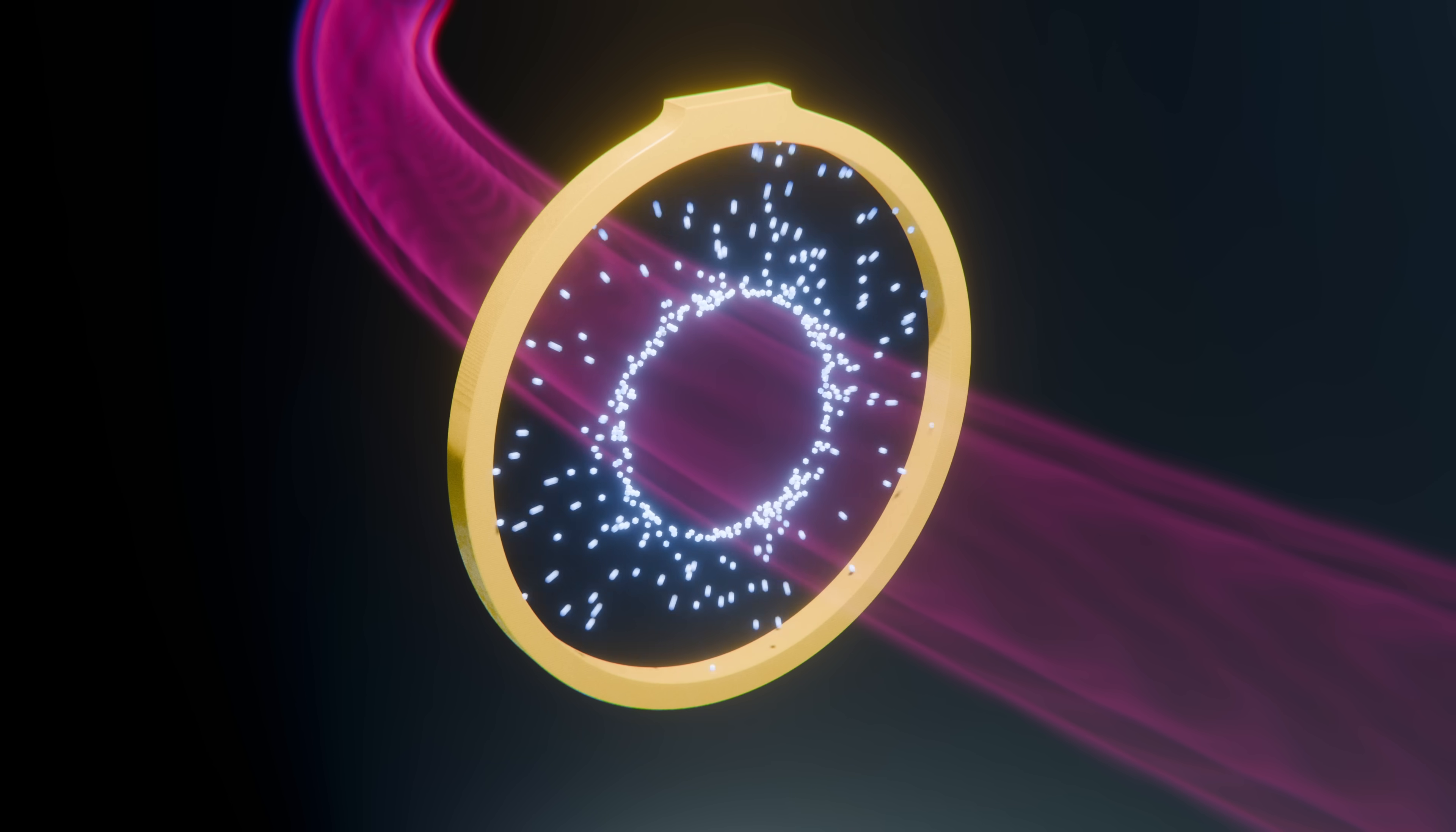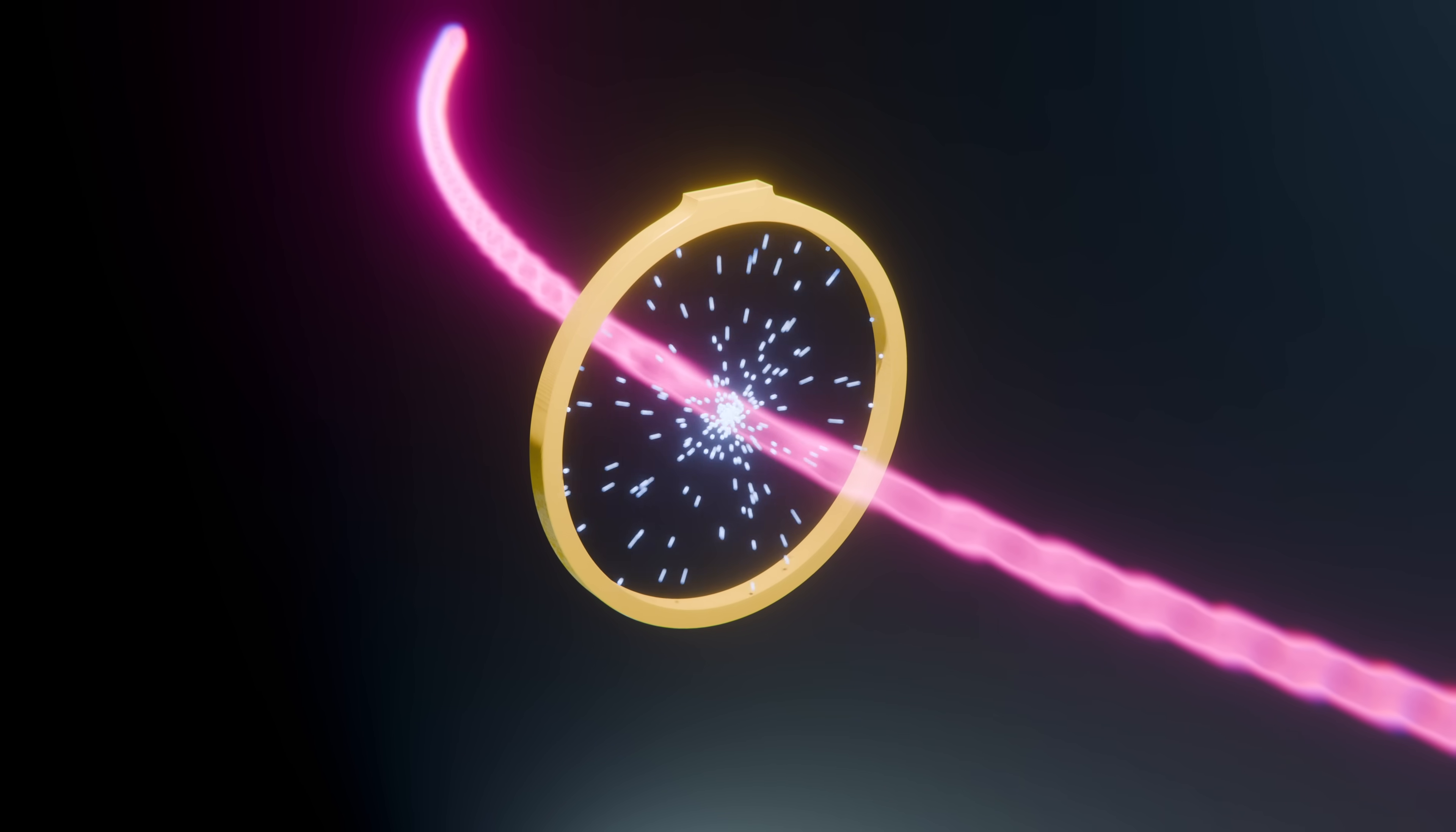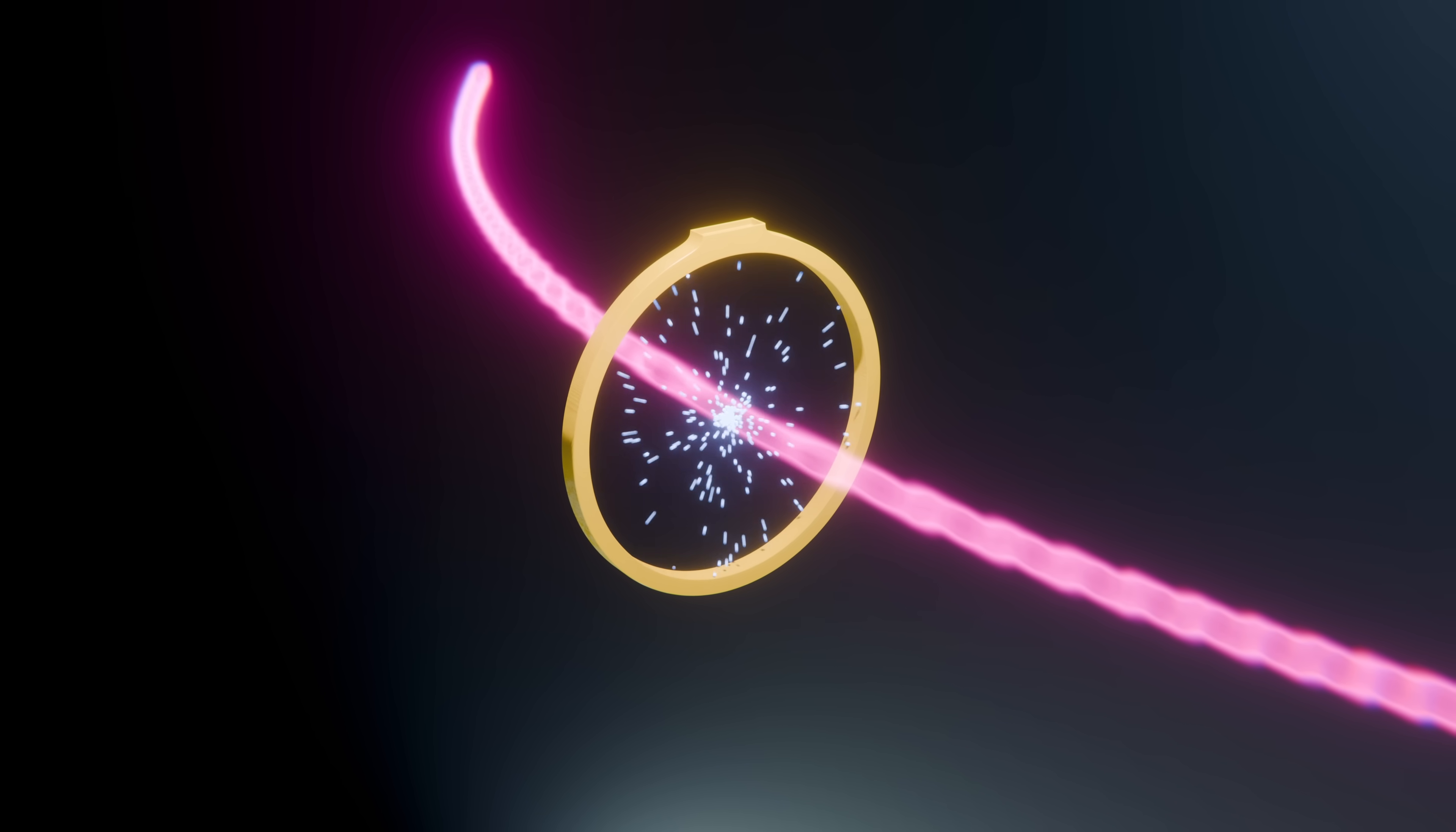so you can contain more energy with smaller magnetic fields in a smaller machine. Most fusion devices, like tokamaks, operate at low beta. They need gigantic magnetic coils to confine the plasma, because the magnetic field pressure has to be much stronger than the plasma itself.